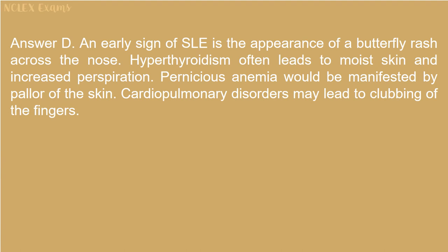Answer D. An early sign of SLE is the appearance of a butterfly rash across the nose. Hypothyroidism often leads to moist skin and increased perspiration. Pernicious anemia would be manifested by pallor of the skin. Cardiopulmonary disorders may lead to clubbing of the fingers.